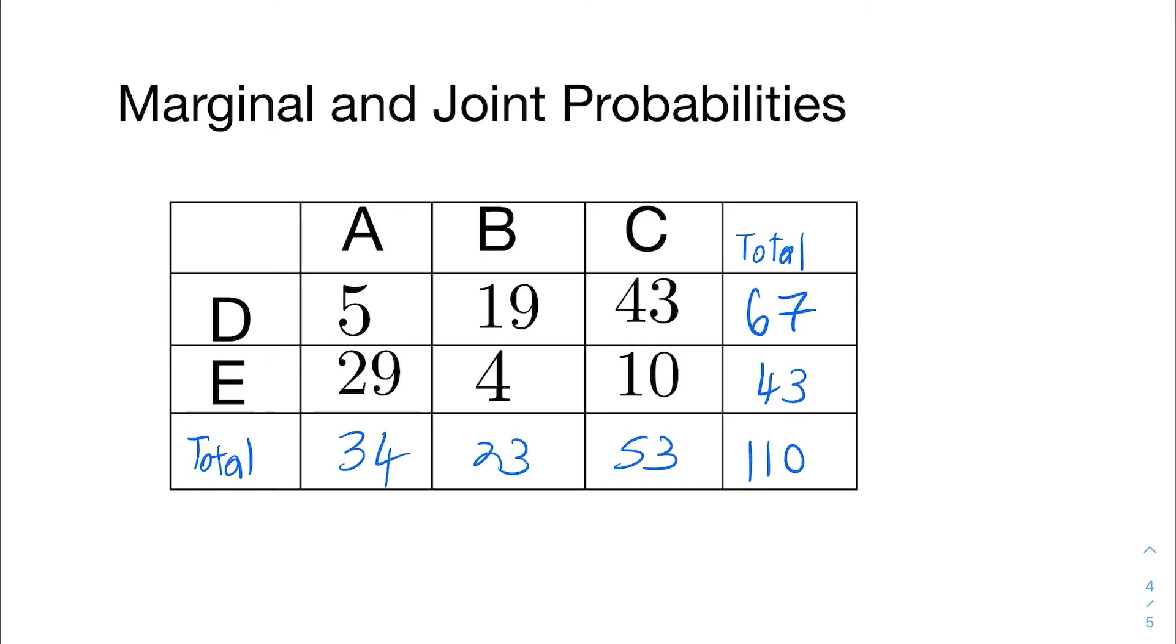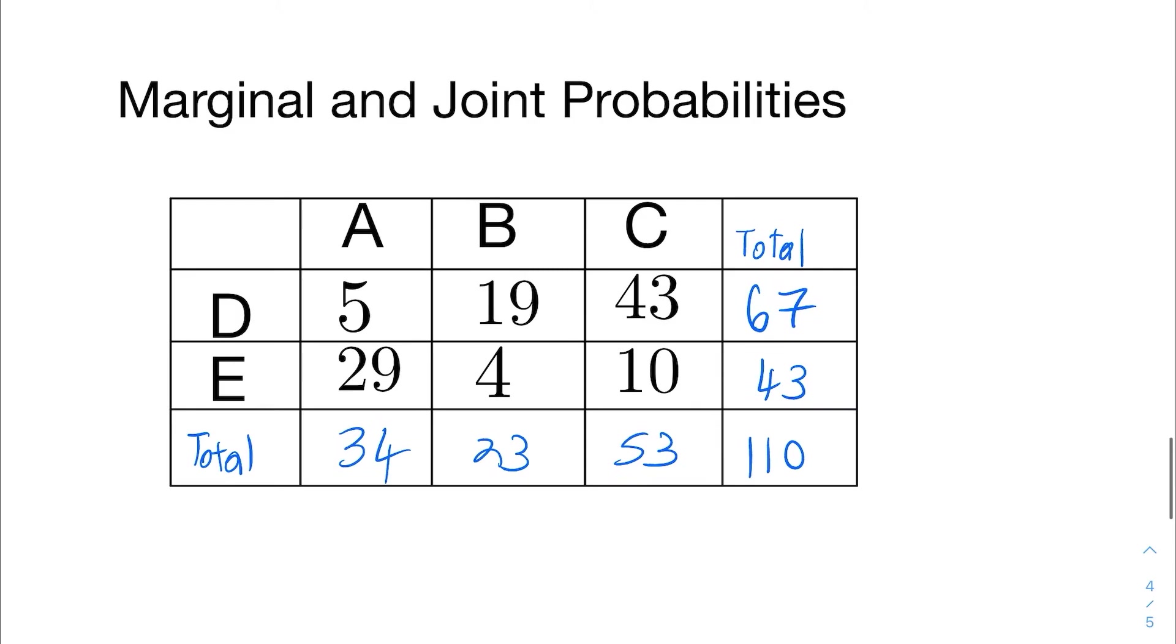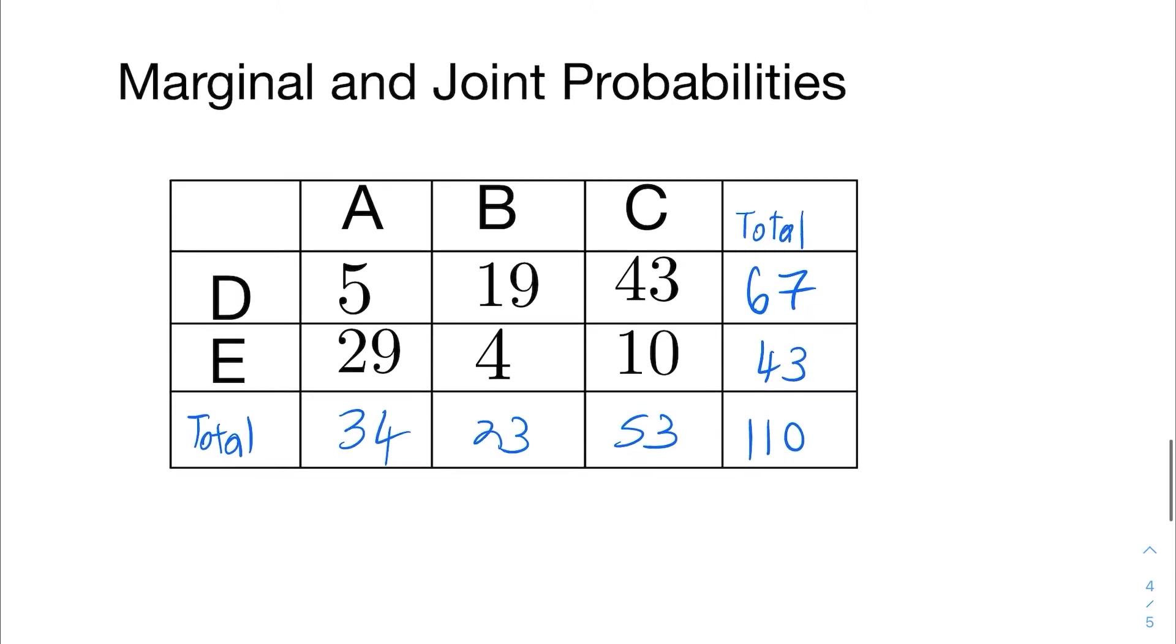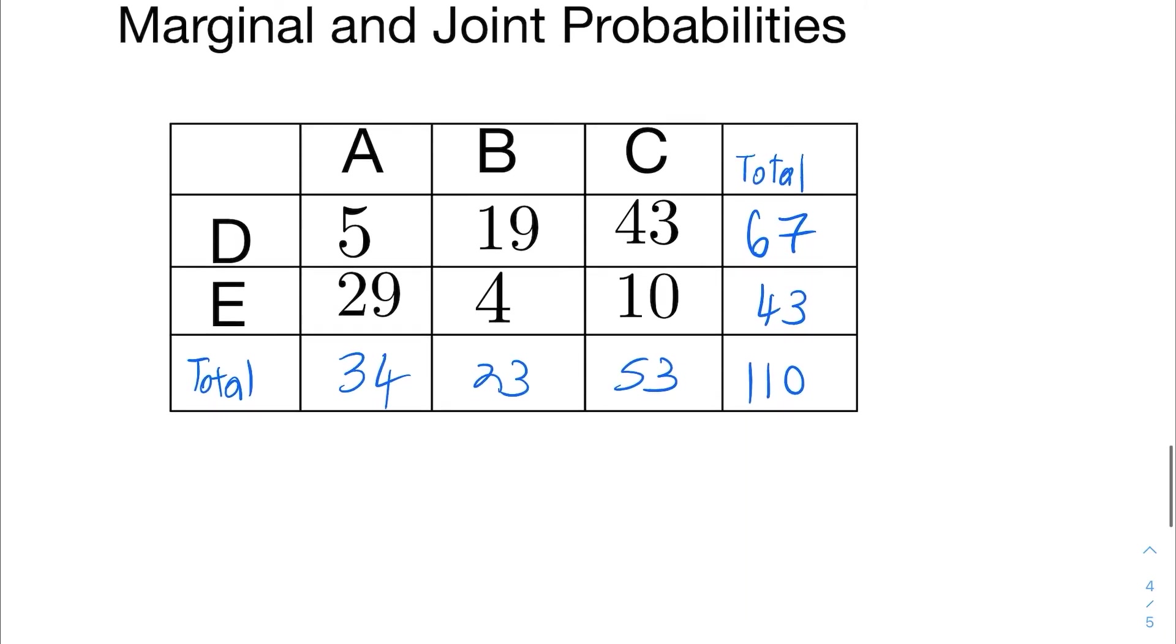All right, so I have all my totals. Now I can find the probabilities from these counts. Now for instance, here are the marginal probabilities right here. These are the marginal probabilities when I divide them by the grand total.